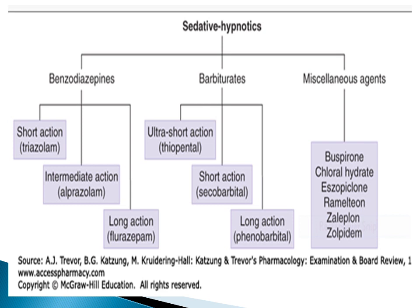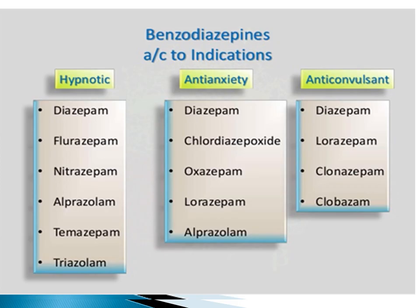Benzodiazepines are classified as: short-acting — triazolam; intermediate-acting — alprazolam; and long-acting — flurazepam. Barbiturates are classified as: ultra short-acting — thiopental; short-acting — secobarbital; intermediate-acting — amobarbital; and long-acting — phenobarbital. Miscellaneous agents include buspirone, chloral hydrate, zopiclone, ramelteon, and zaleplon.